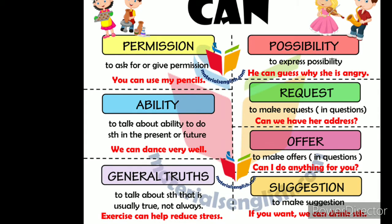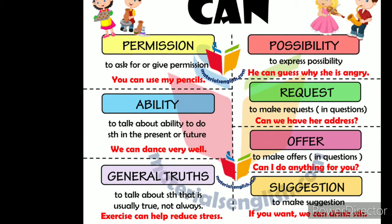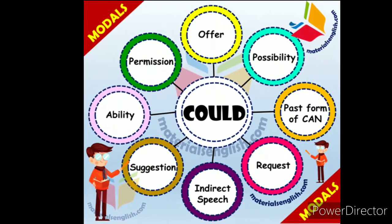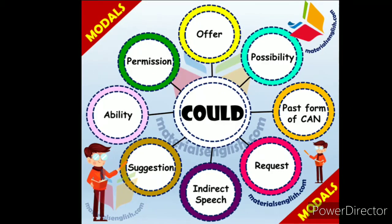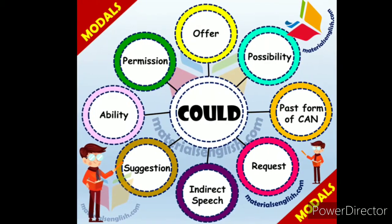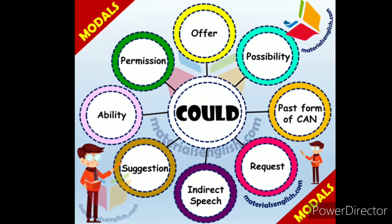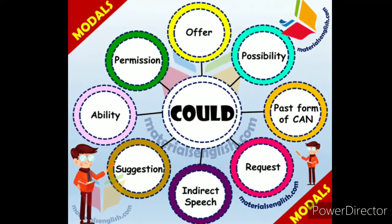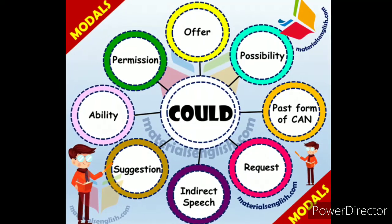Could: impossibility, offer, permission, ability, suggestion. Can you use the past form or request? You can use it. Might: conditional clause, second type. Could: conditional clause, second type. Past form verb — we use that sentence.